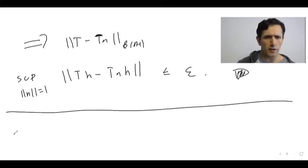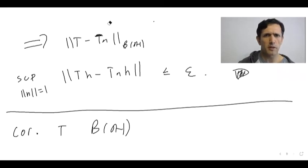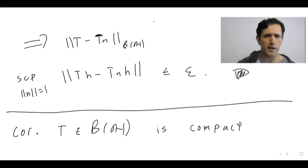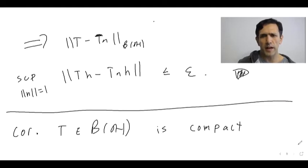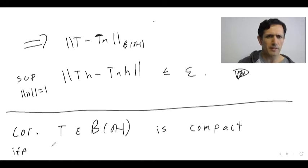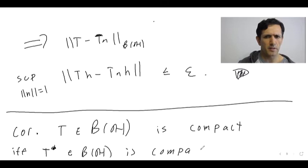Let's prove a useful corollary. Again, H is a separable Hilbert space. T is compact if and only if the adjoint T star is compact. You can prove this for Banach spaces, but it's a little more complicated and deeper than the level we're at right now.